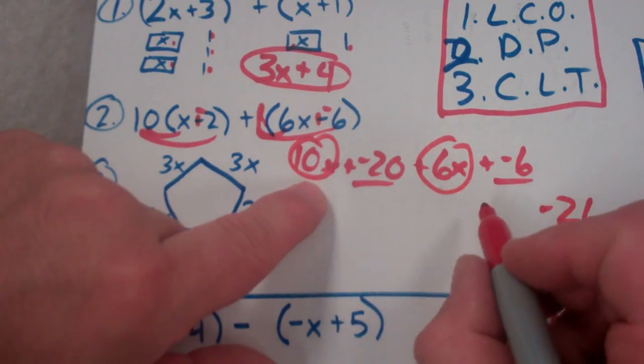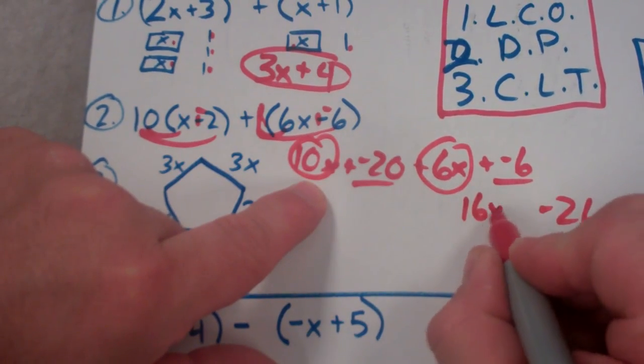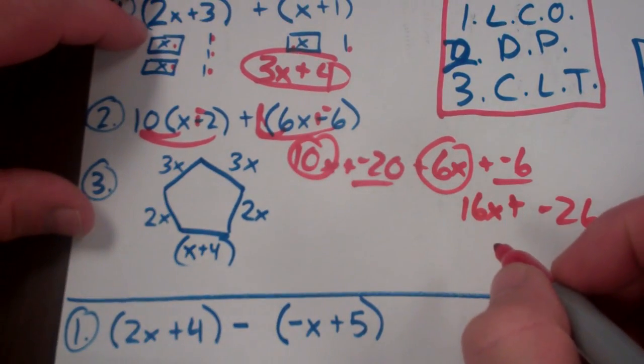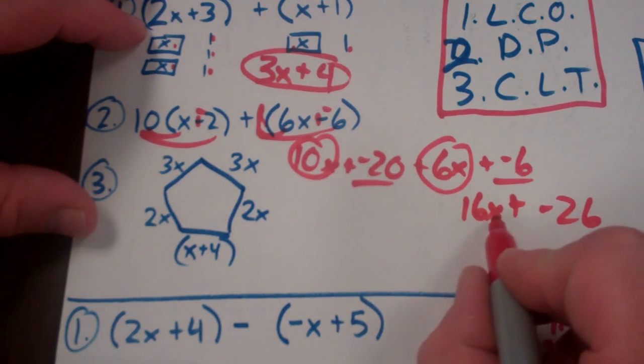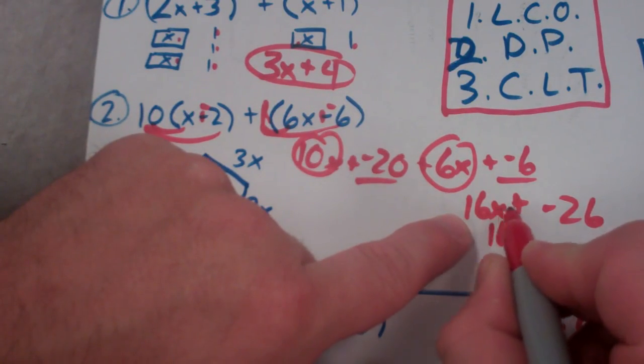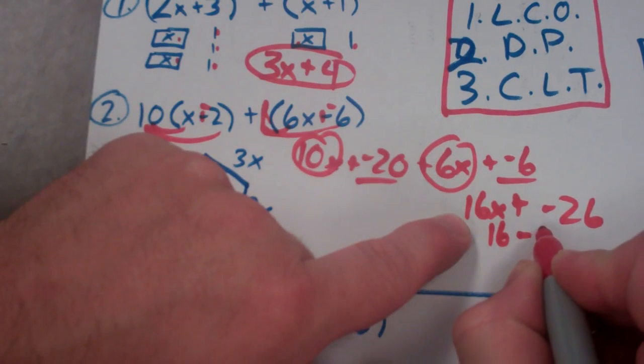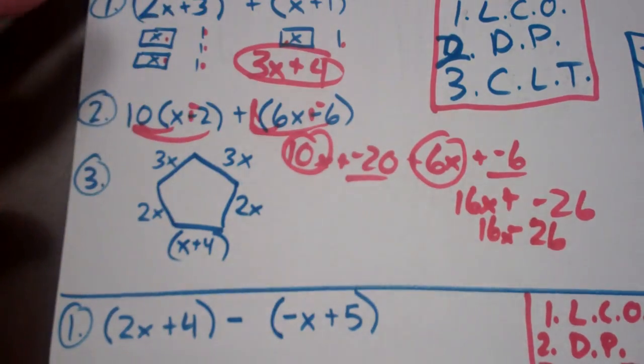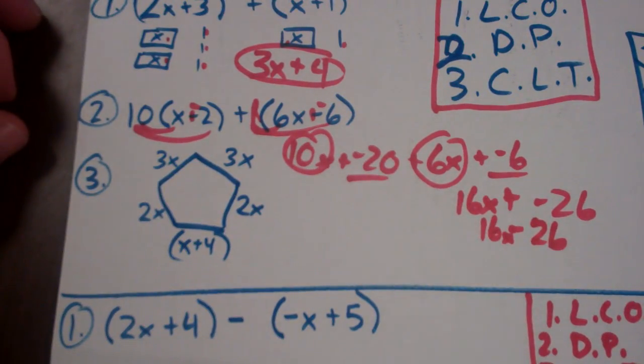And I have 6x and 10x. Those are like terms as well. Add them together. You get 16x. So you get 16x plus negative 26. Or sometimes you might see this written also. We could change this back. Leave change opposite again. And 16x minus 26 is the same thing as 16x plus negative 26.